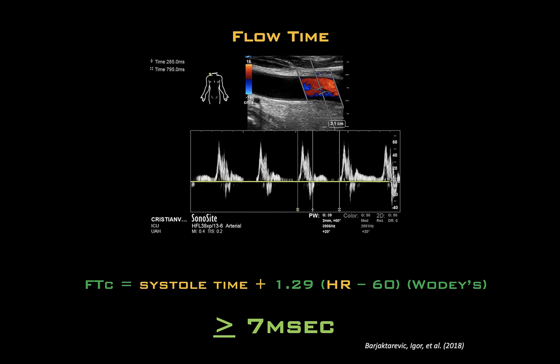Perhaps the easiest way to use the carotid artery to test for volume responsiveness is to look for the change in carotid flow time. Flow time or left ventricular ejection time reflects the duration of blood flow during systole, measured from the beginning of the upstroke to the trough of the incisural notch on the waveform. There are different equations in the literature, but perhaps the most novel is Woody's method which corrects for heart rate. Flow time variability reflects changes in stroke volume with a fluid challenge, so measure this before and again two minutes after a passive leg raise. During one decent qualitative study, a variation of more than seven milliseconds had 97% positive predictive value for fluid responsiveness.